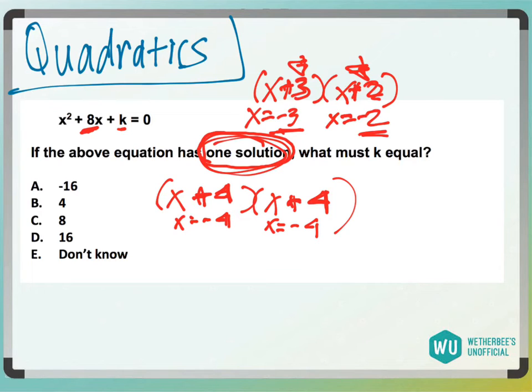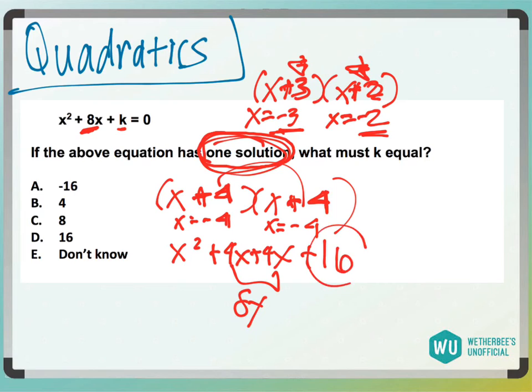Now to solve for k, I would just foil this. x squared plus 4x plus 4x, which we know is that 8x, and then 4 times 4 is 16, so k here would have to be 16.